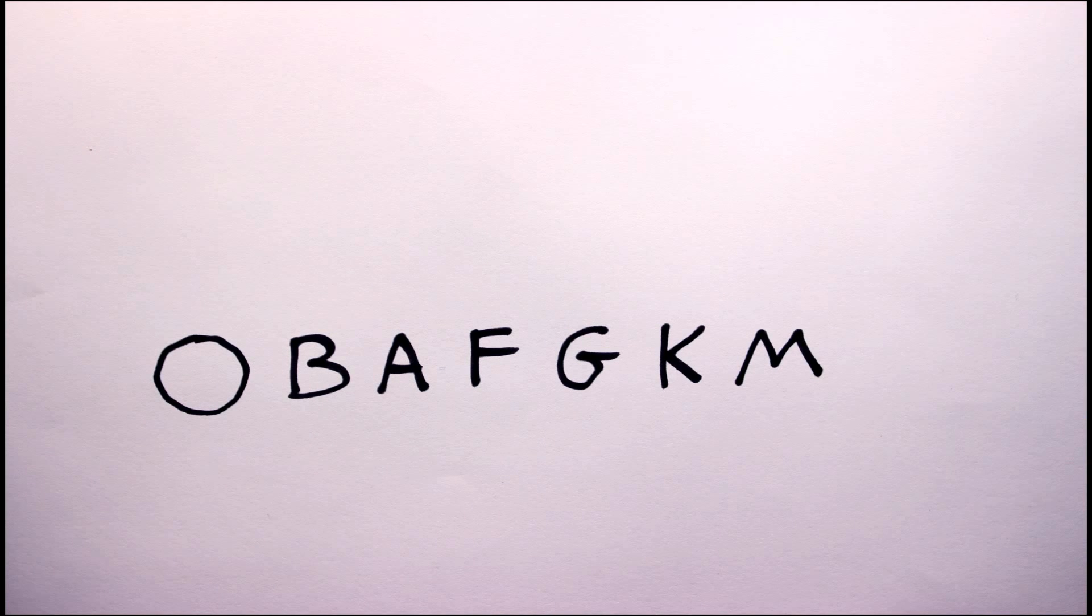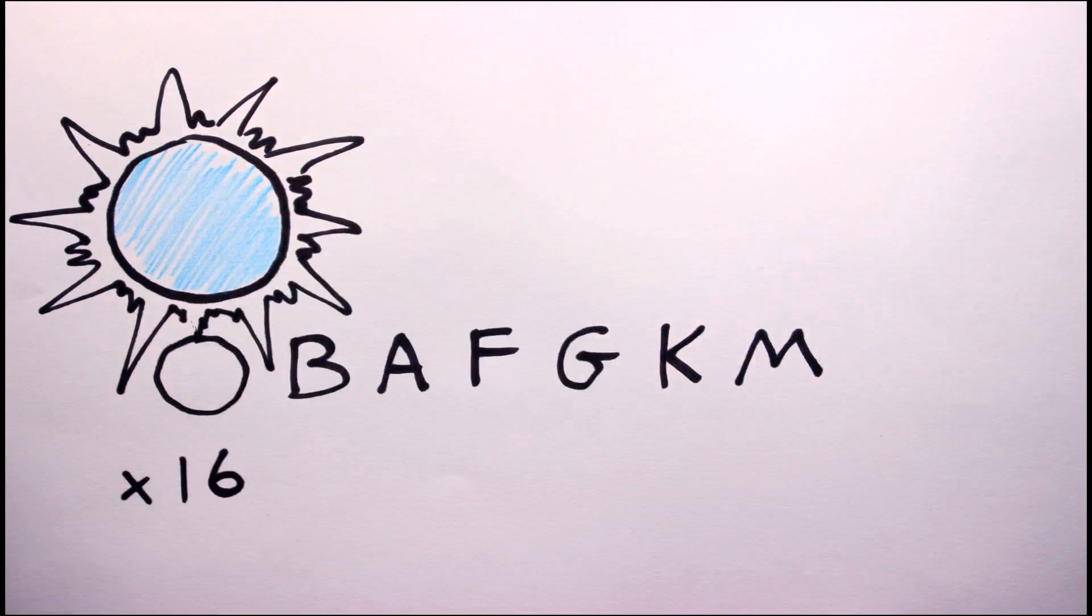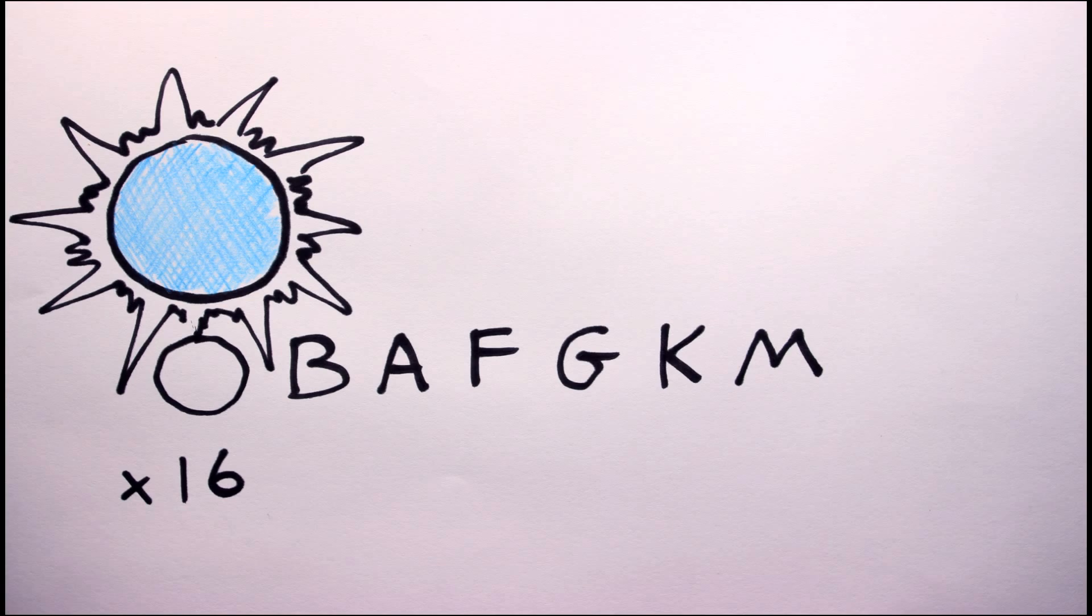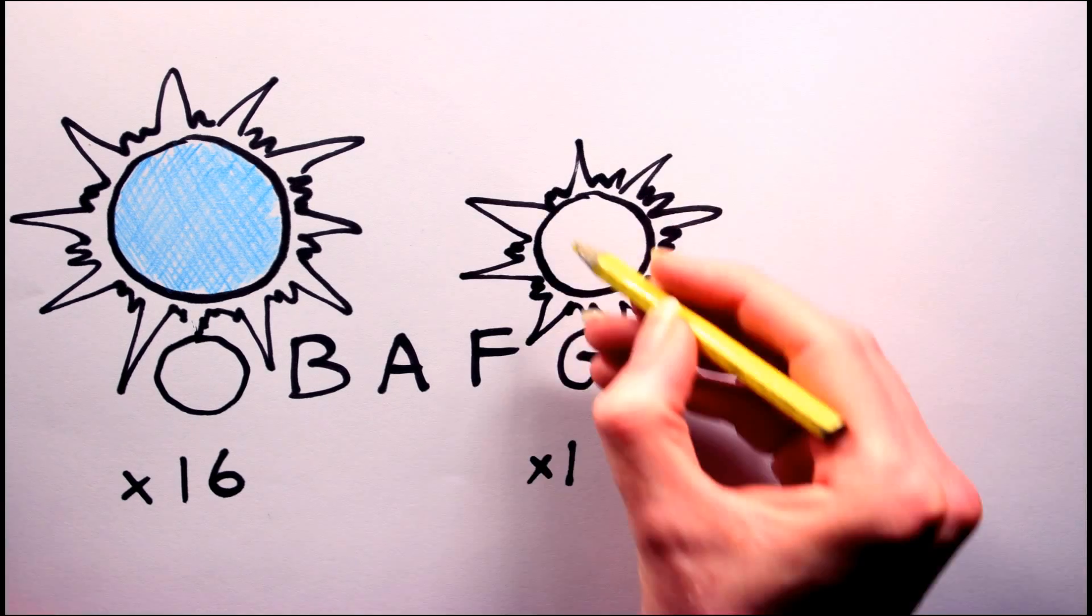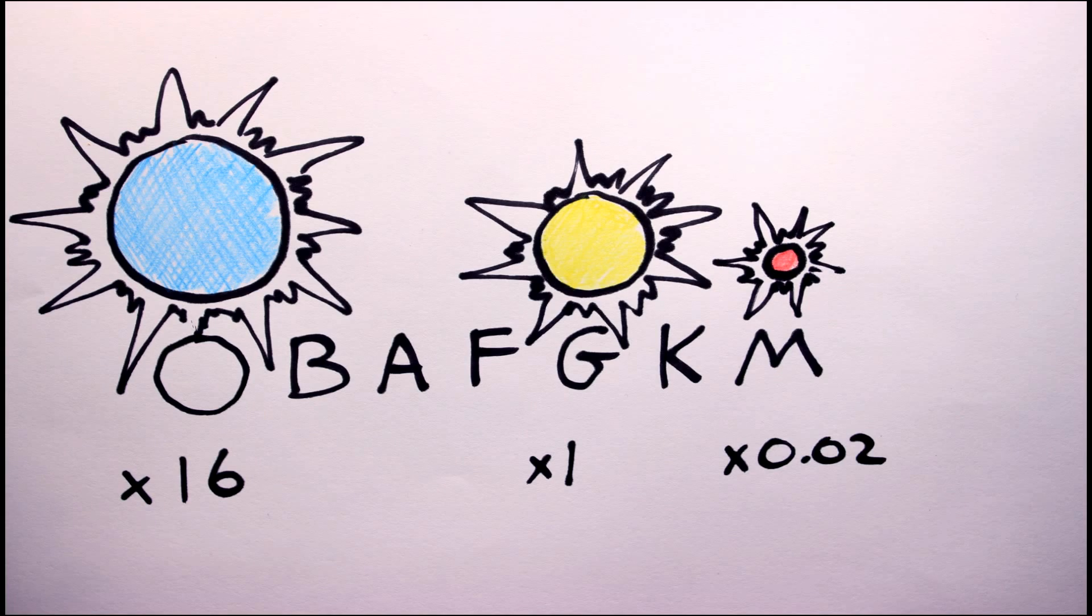The higher up the list a star is, the more massive it is. Conversely, the lower down the list a star is, the less mass it has. At the top, O stars have a mass upwards of 16 times greater than our own sun and are blue in colour. Our own sun is a G star and is yellowy orange in colour. And the smallest M stars are red and are about 2% as massive as our own sun.